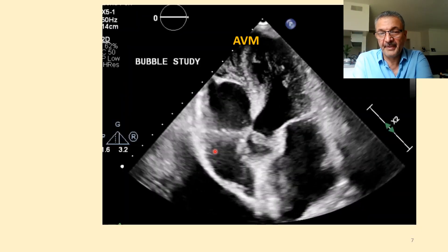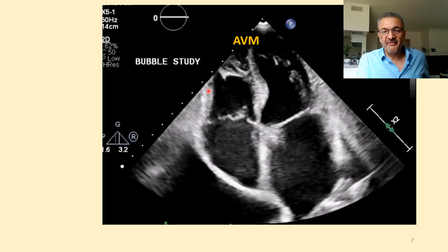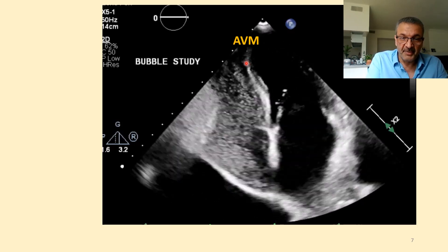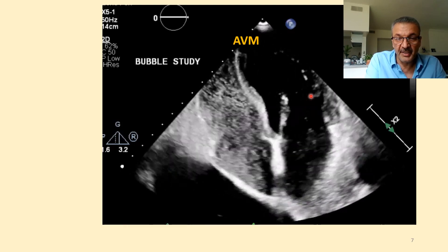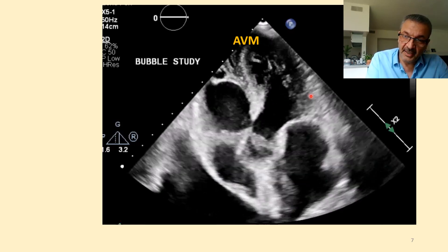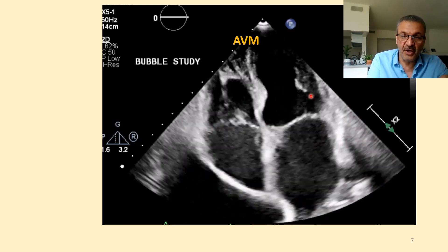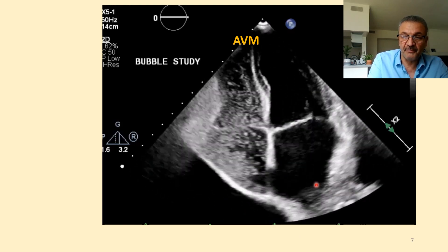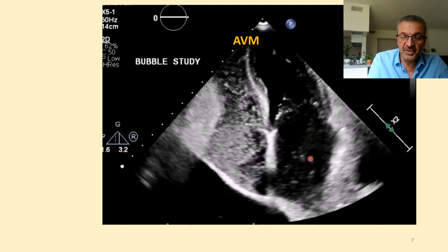Now let's see what happens with AV malformation. In AV malformation, the bubble bypasses through the lung because we have anastomosis of arterioles directly to venules — so we don't have capillaries in many spots of the lung. Those bubbles can pass through the lung, go to the pulmonary vein, and through the pulmonary vein come to the left side.